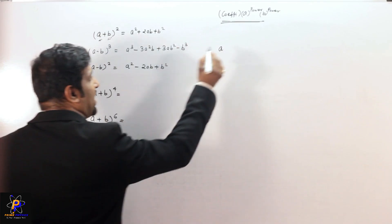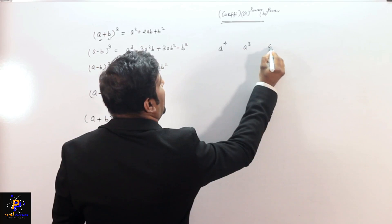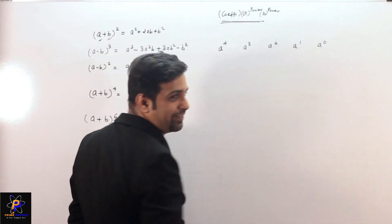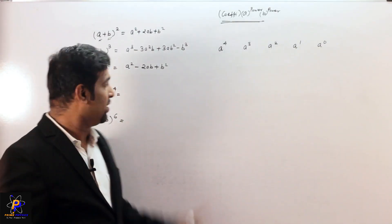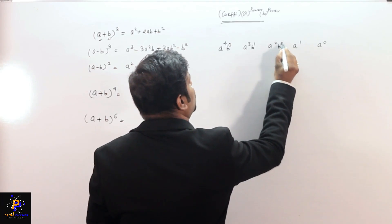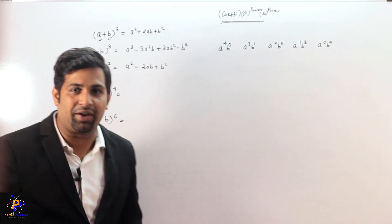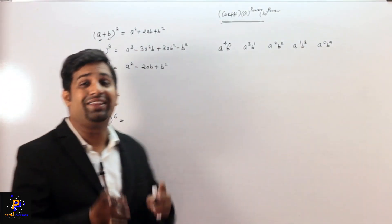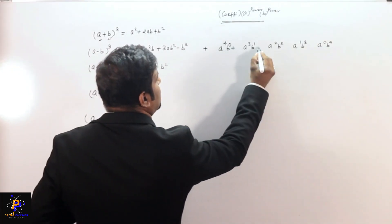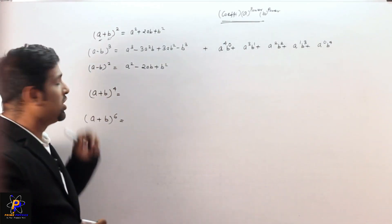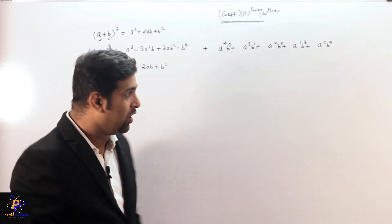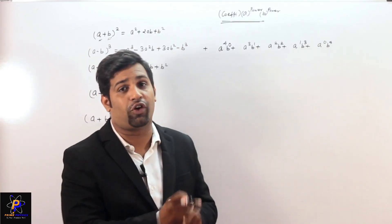When I say (a+b) raised to 4, a's power starts from 4, then 3, then 2, then 1, then 0 — a's power decreases. For b, it starts from 0, then b¹, b², b³, b⁴ — b's power increases. Since the sign here is plus, all terms will be plus. Now what's left is the coefficient — that is the important part. I will show you a shortcut for that.